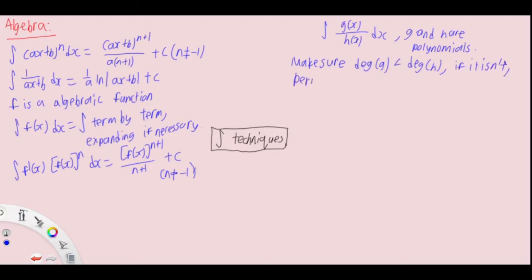If it isn't, perform long division to ensure the remaining fraction has a smaller degree in the numerator and higher degree in the denominator. Afterwards, check for possible forms.